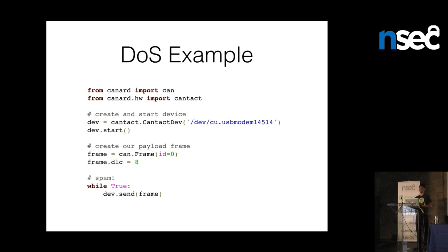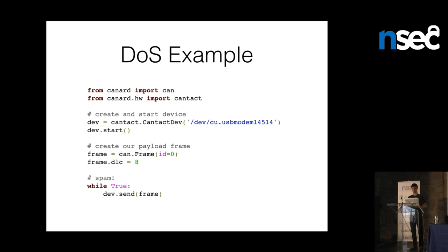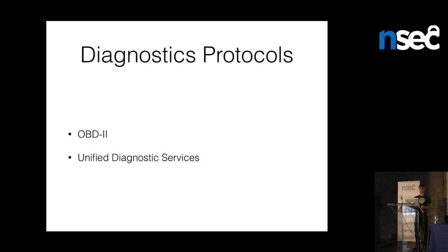From this we can implement the denial-of-service attack in real code on one slide. We import some stuff, create a Cantact device — which has support for hardware-level filtering and silent mode that SocketCAN doesn't. We start it, create a payload frame with ID zero and eight zero bytes, and then while true, send it. Your car will have check engine lights and various bad things dinging. Don't do this. But since breaking your car is only so much fun, we should talk about useful things you can do.